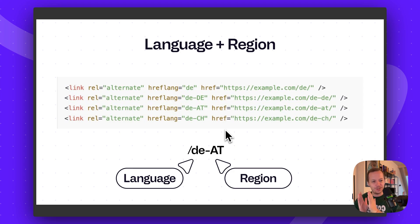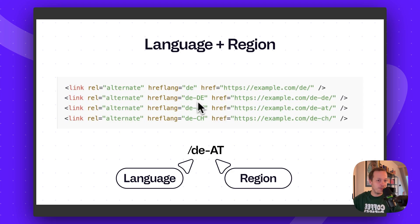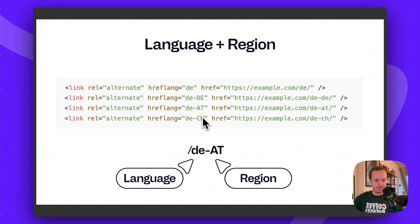Now let's talk about language and region. We were mainly focusing on language — English and German — but you can also have one language with different regions and different content per region. For example, German is spoken in Germany, Austria, and Switzerland. Imagine we have a blog article about supermarkets and we want to customize it for the Austrian region, mentioning Austrian supermarket names instead of German ones. We can specify in the hreflang tag: same language — German — but if someone from Austria is using the website, please point them to this article.